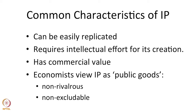Economists have also used two more terms to understand intellectual property. They say intellectual property by its nature is non-rivalrous and non-excludable. Non-rivalrous means the use of intellectual property by one person does not cause rivalry — it does not take away the enjoyment of the same intellectual property by another person. To understand the non-rivalrous nature of intellectual property, imagine an empty room of the size of a normal classroom.